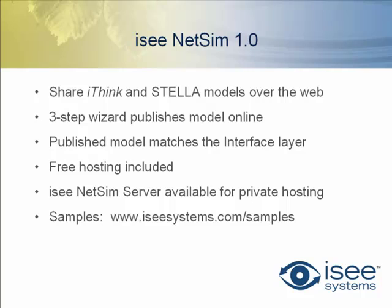IC NetSim is a feature we've introduced with version 9.1. Version 9.1 allows you to take models that you've built with the user interface and export a file that is then run through the IC NetSim Wizard. That publishes your model to the web so that other people can see, use, and interact with your model. It's a very simple process — it takes only three steps — and the model that you see online looks just like the interface layer of your model in iThink or Stella.